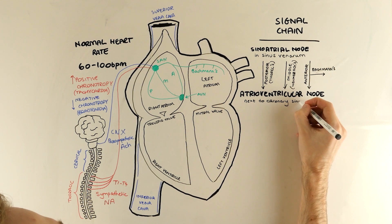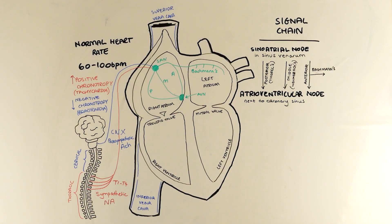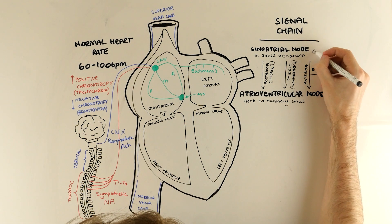Having received the signal from the sinoatrial node, the atrioventricular node purposefully halts the signal chain by approximately a tenth of a second, which gives the atria time to empty properly into the ventricles, which means they're nice and full by the time they contract.